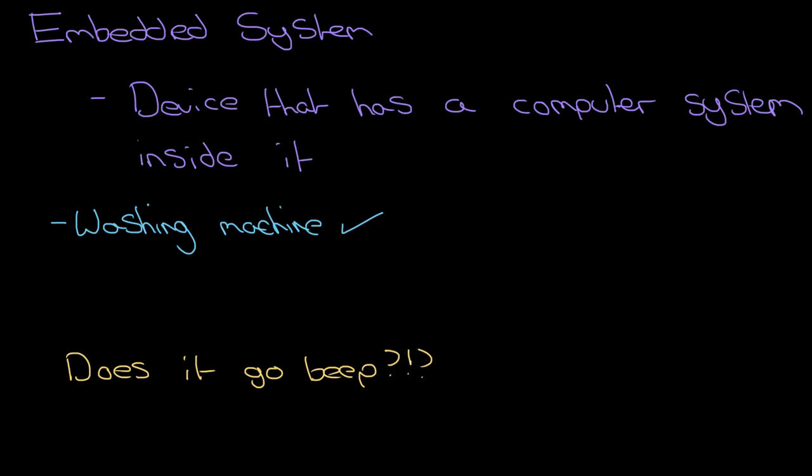Does it go beep? Let's have a think about other things. Sticking with the kitchen that might have an embedded system in it. A dishwasher, certainly when I finish, when I set up my dishwasher cycle, when I press a few buttons on it to let go, it definitely beeps at me and it definitely beeps when it finishes. So that is a good example of an embedded system. That's definitely one.